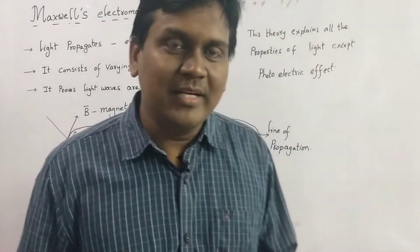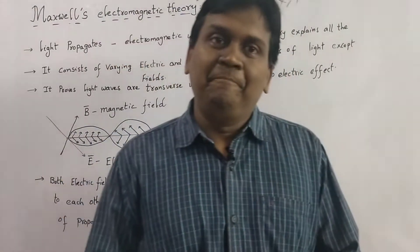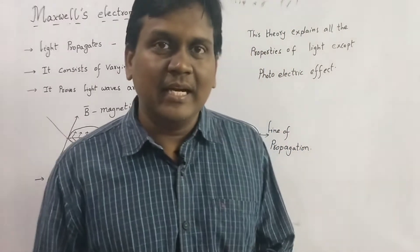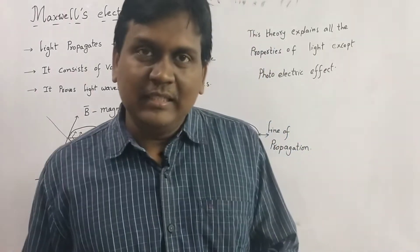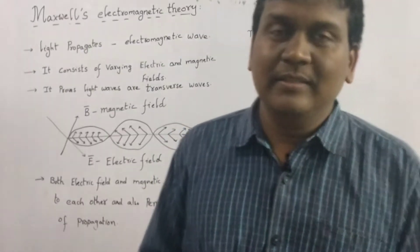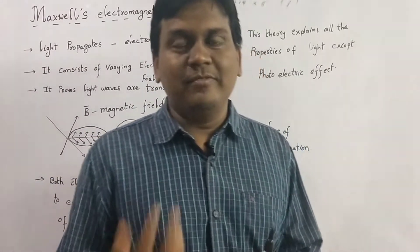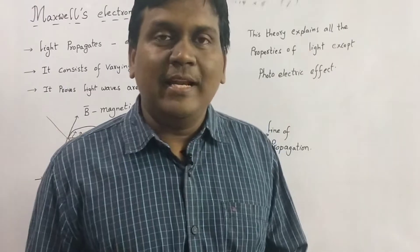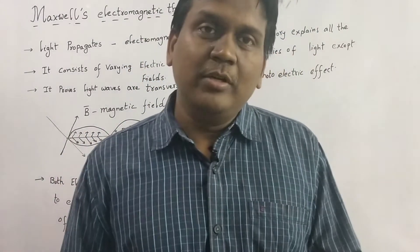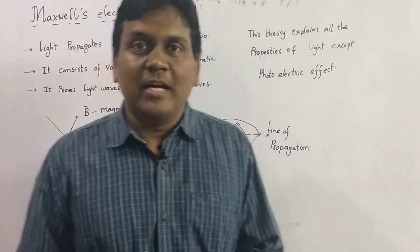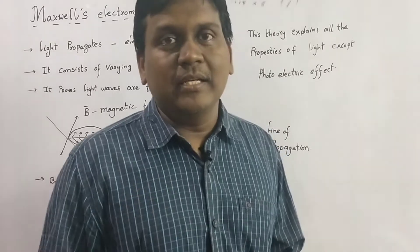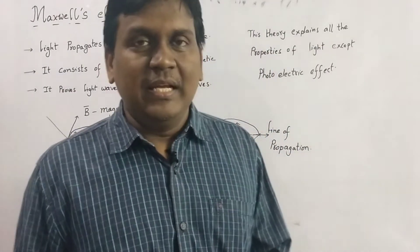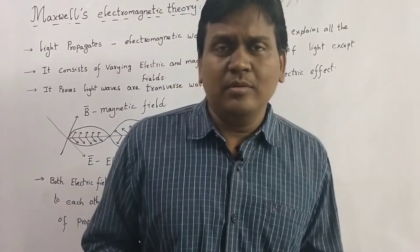Welcome to Praveen Tutorial Point. In this session we are going to discuss Maxwell's electromagnetic theory. In previous classes we have seen Newton's corpuscular theory and Huygens' wave theory. According to Maxwell, the light is a form of electromagnetic wave — whereas Newton considered light as corpuscular and Huygens considered light as a wave, Maxwell considered light as an electromagnetic wave.